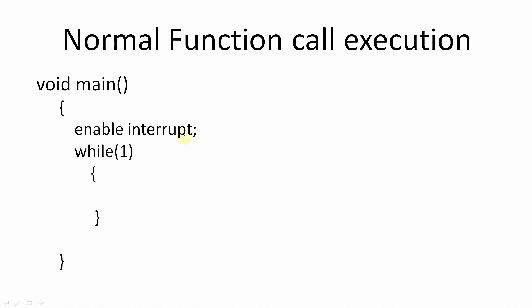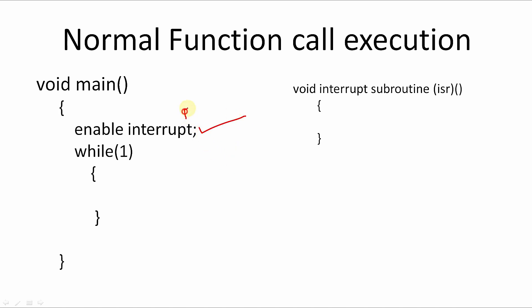Now let us look at the interrupt part. Before entering the explanation of how interrupts actually work, we need to enable the particular interrupt — whether it is an external interrupt or any kind of peripheral interrupt like UART interrupt, SPI interrupt, I2C interrupt, etc. We enable the desired interrupt before the logical part of the program. Once the interrupt is enabled, we write a function called the Interrupt Service Routine (ISR) function for that interrupt. Let us take the example of enabling the EXTI interrupt.